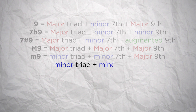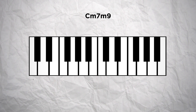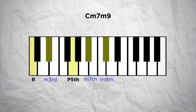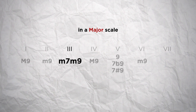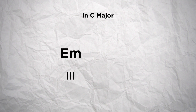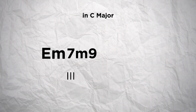Now we could have a minor triad with a minor 7th and a minor 9th. This type of chord would be noted as minor 7th minor 9th. For a C chord for example, that would be made of the root note C, the minor 3rd Eb, the perfect 5th G, the minor 7th Bb and the minor 9th Db. This is a type of chord you can find in a major tonality on the 3rd degree and in a minor tonality on the 5th degree, but it is less common in a minor tonality because for a 5th degree chord, a dominant 9th chord is often preferred. So in C major, the 3rd degree would be E minor, giving us an E minor 7th minor 9th chord.